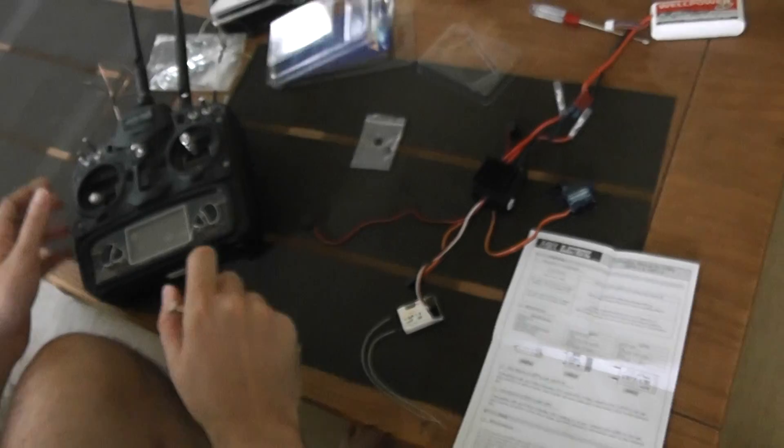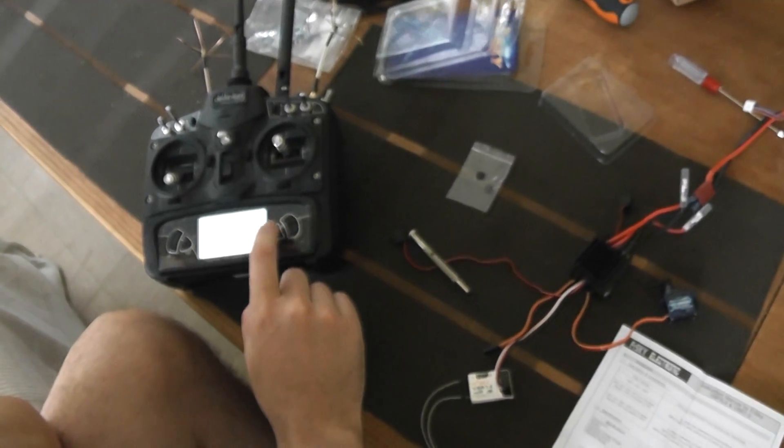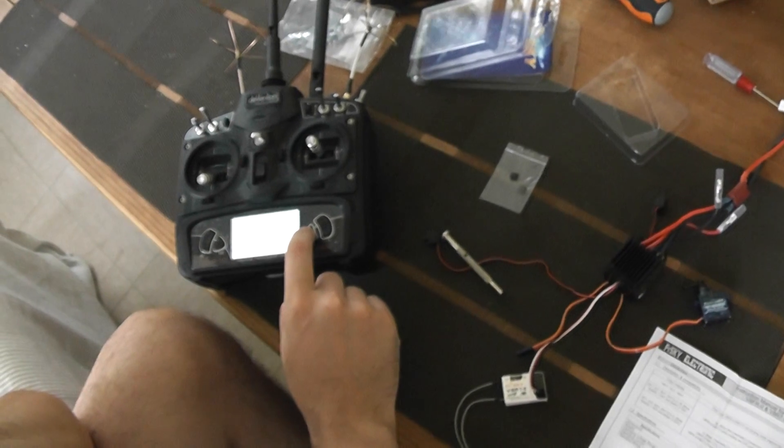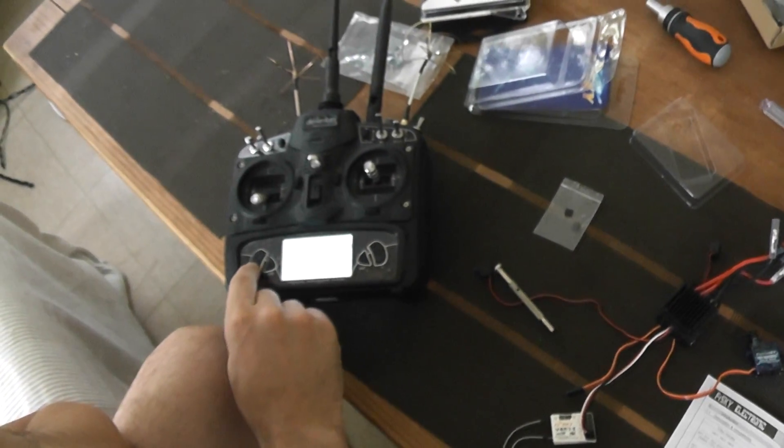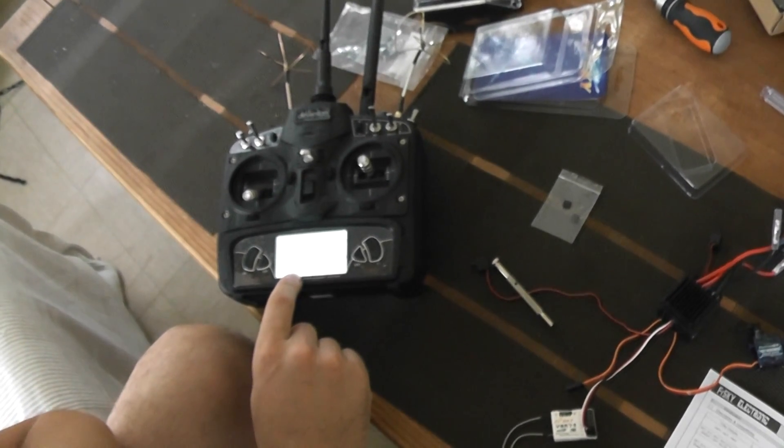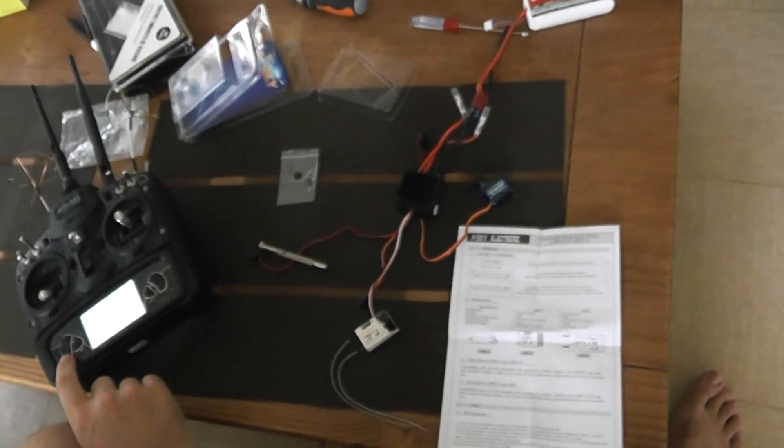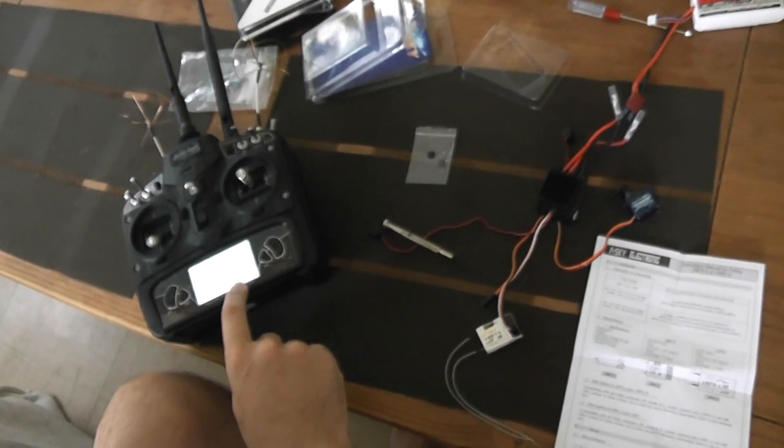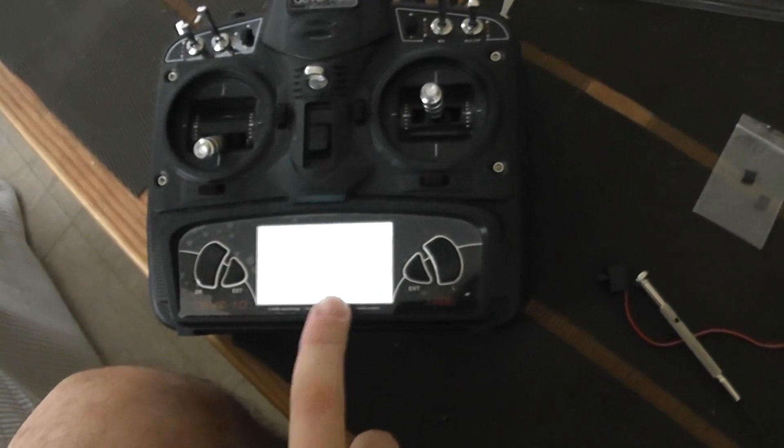And I will turn the DeviationTX controller first. You will see I will select a new model. And I will select the FrySky V8 as indicated here. So I will go to the bind, here in French but it's the binding button.